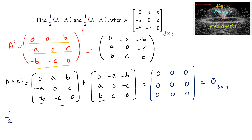So (1/2) times (A + Aᵀ) equals (1/2) times the zero matrix, which is 0.